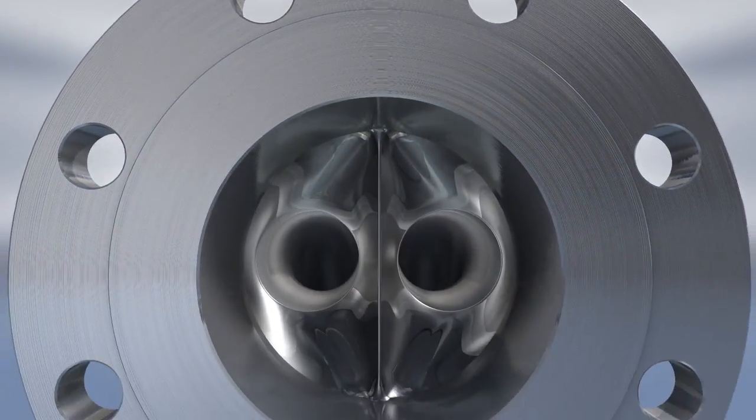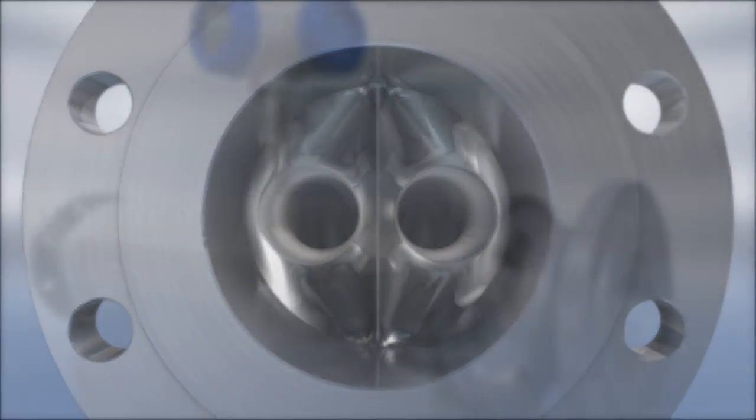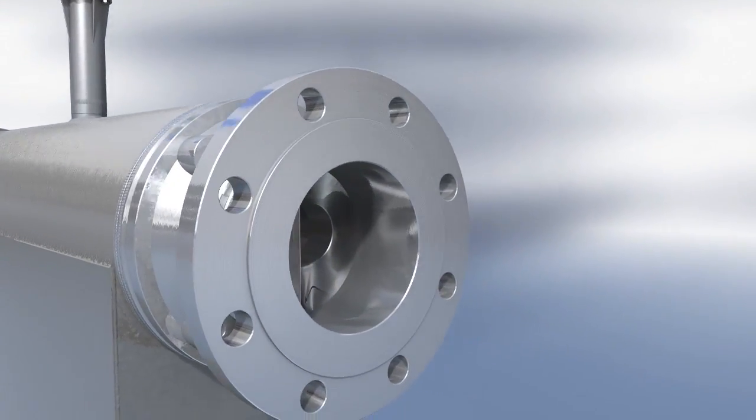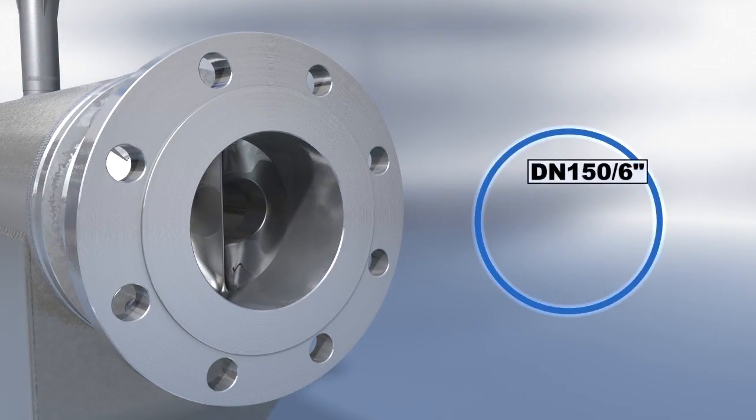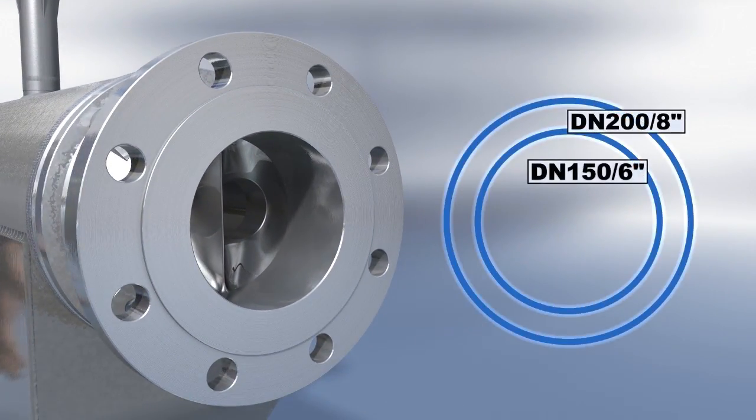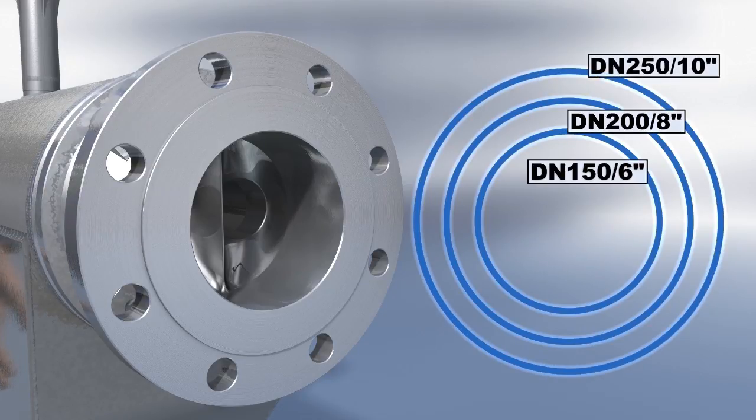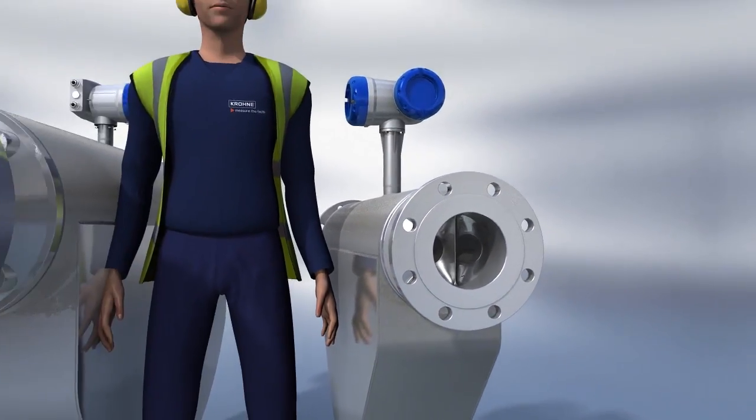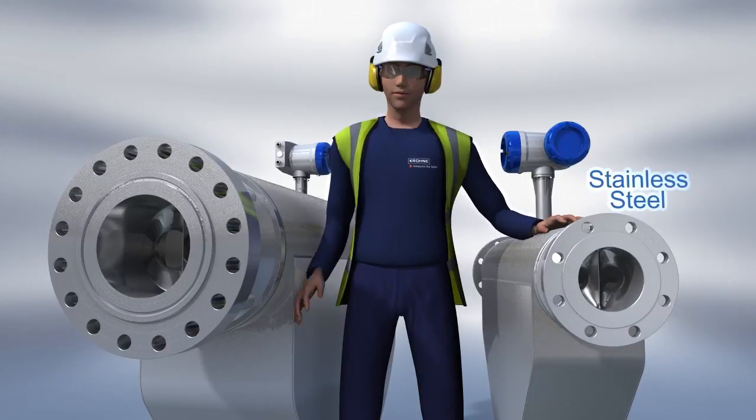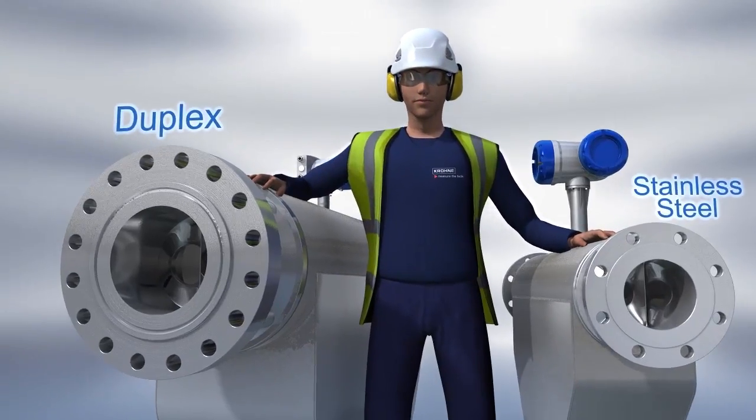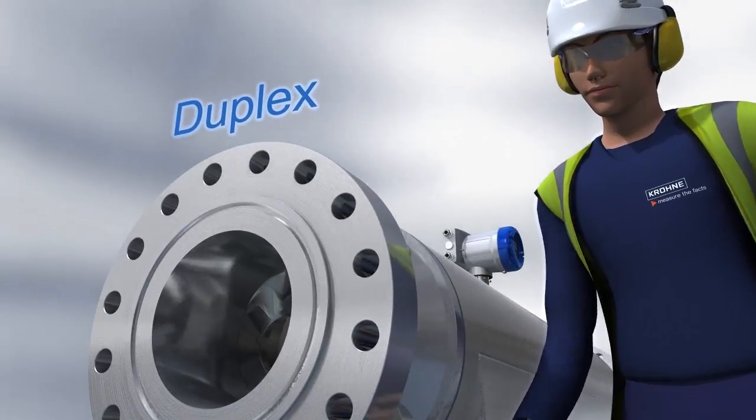The OptiMass 6400 is a twin bent tube design. Large line sizes available are S150, S200, and S250. The meter is available in multiple installation lengths in stainless steel and duplex. The duplex high pressure variants are rated at 200 bar, 2900 psi.